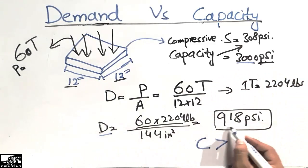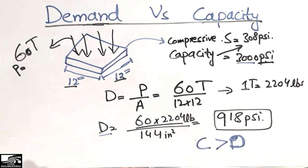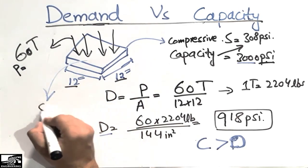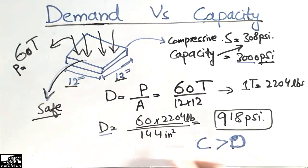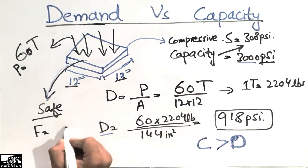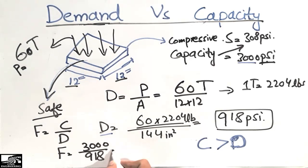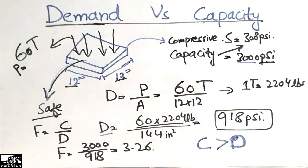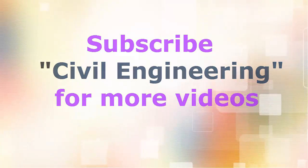Now, the capacity C is 3000 psi, which is greater than the demand of 918 psi. Therefore, this concrete block is on the safe side and will not collapse. To find the factor of safety, we use: Factor of Safety = Capacity / Demand = 3000 / 918, which comes out to approximately 3.27.